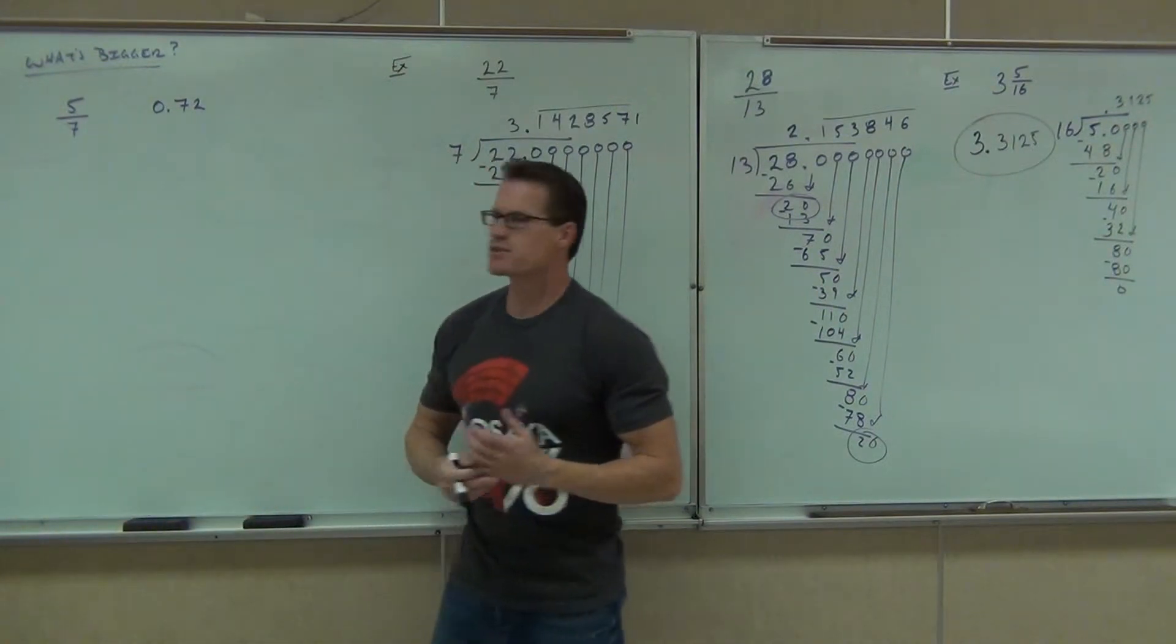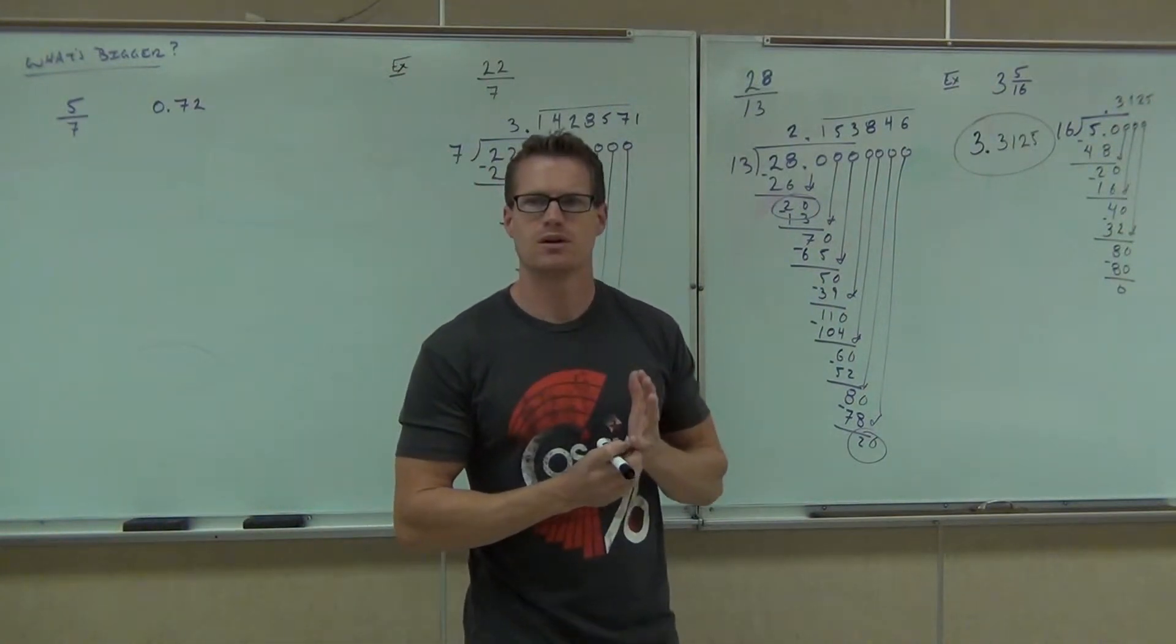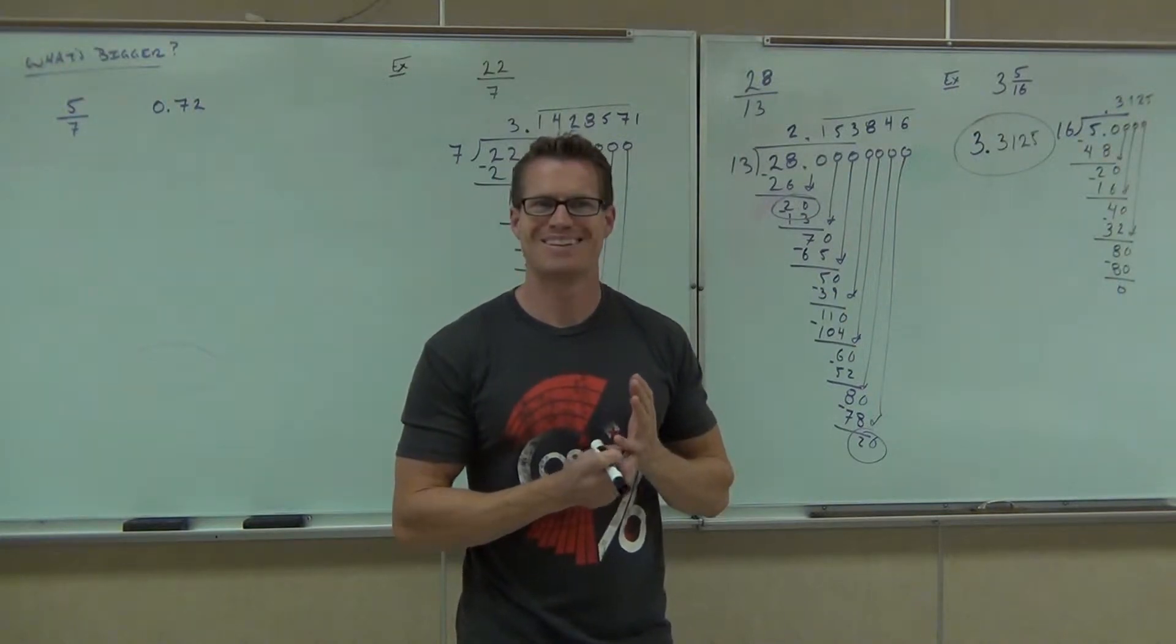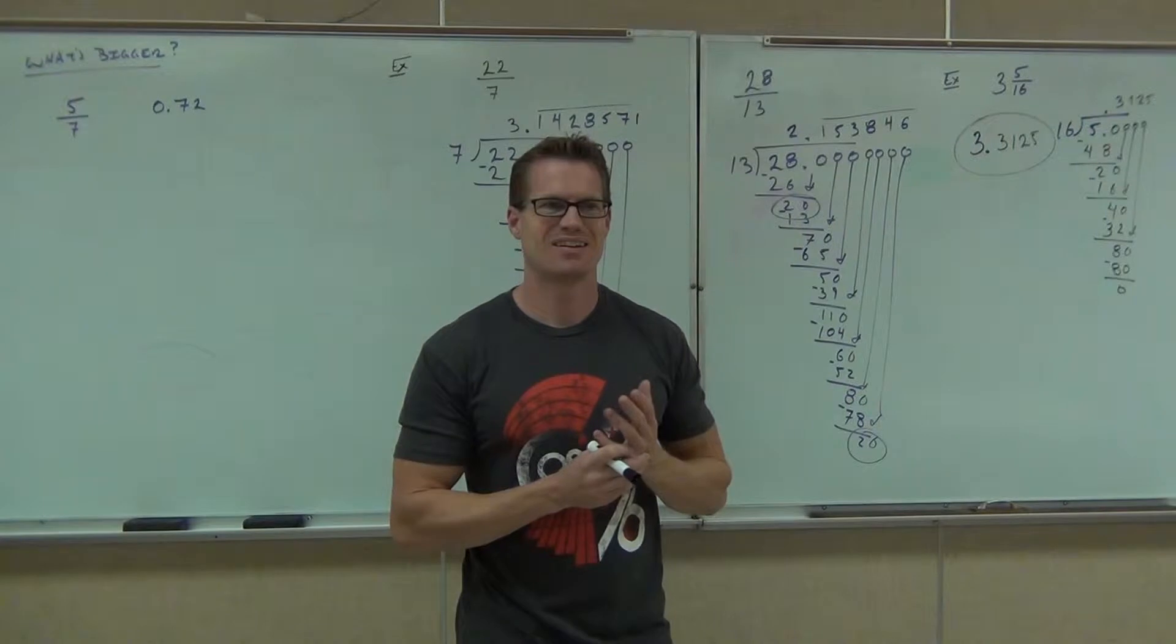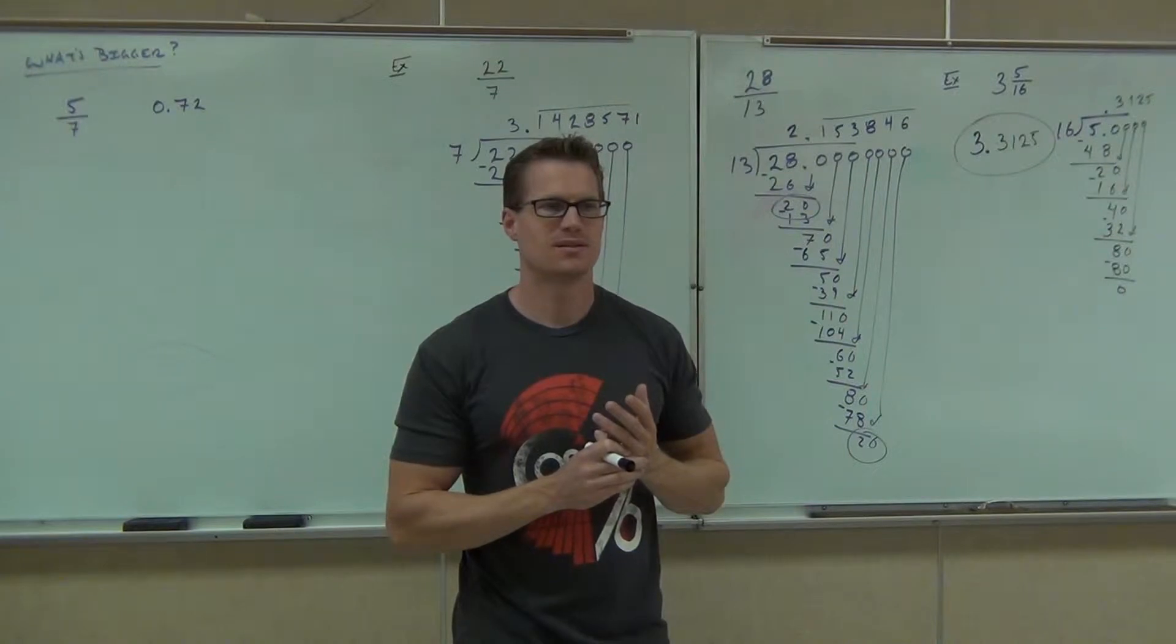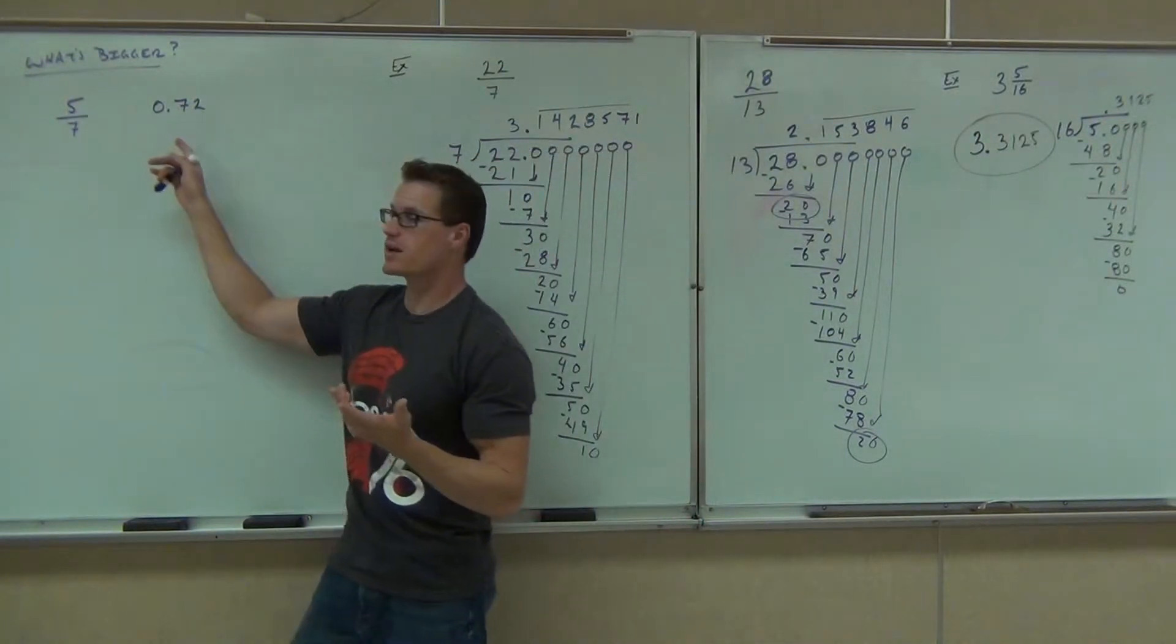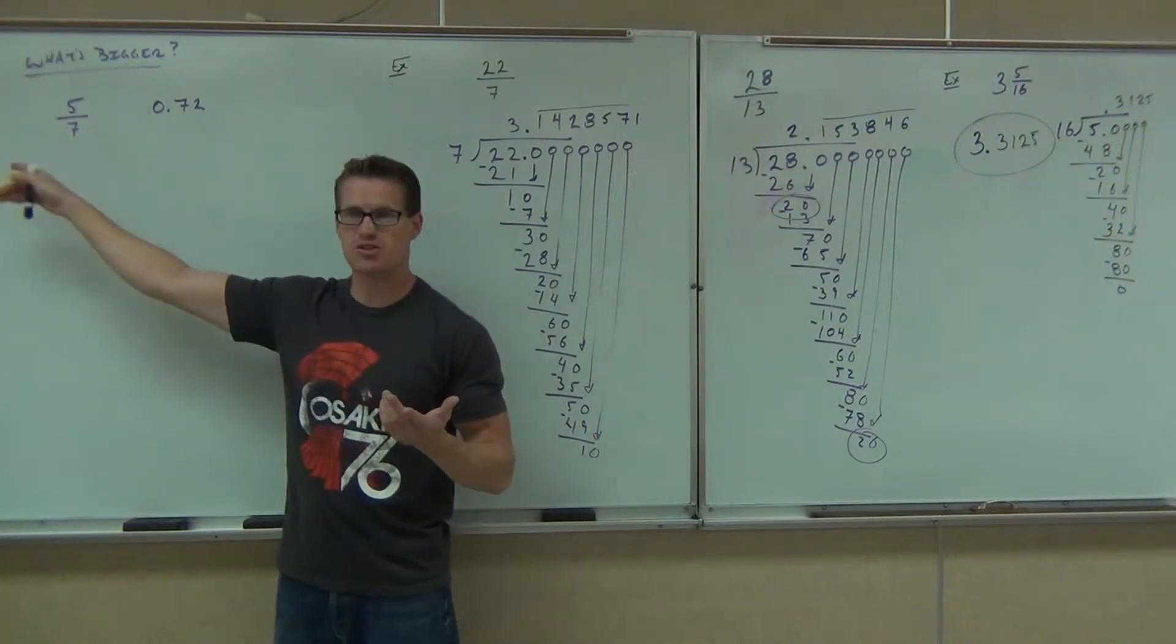Hey, what's bigger, 5 sevenths or 0.72? How do you know? Because I'm guessing. It's 0.71 or 5 sevenths. Wait, how did you get that, Rachel? Okay, so is there a way you can just look at this and find out which one's bigger? No, not really. That's a decimal, that's a fraction.